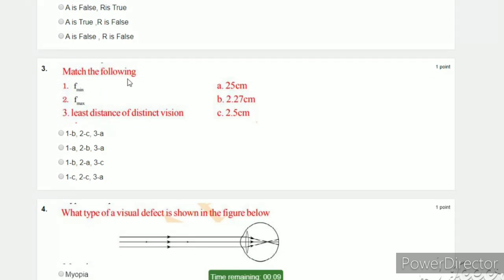Next question: match the following. Here we have focal length minimum, F maximum, least distance of distinct vision. Options: 25cm, 2.27cm, 2.5cm. Least distance of distinct vision for healthy human is 25cm. F minimum focal length is 2.27, focal length maximum 2.5cm. Here we have 3A and 1B, first option.